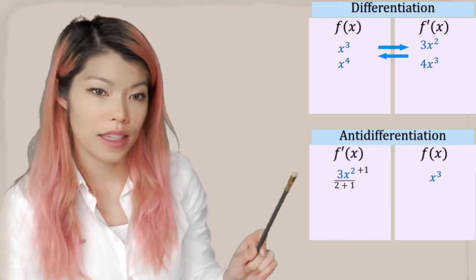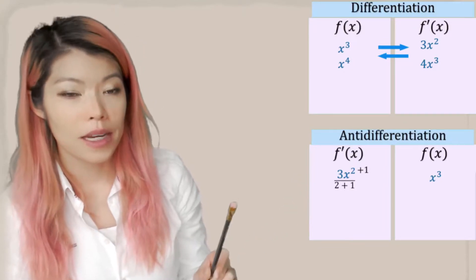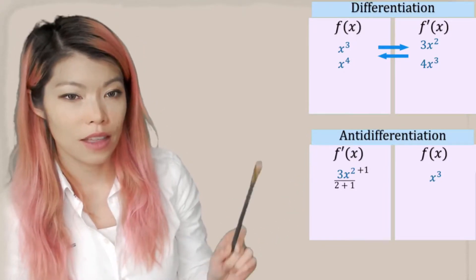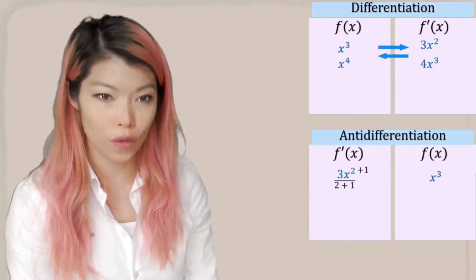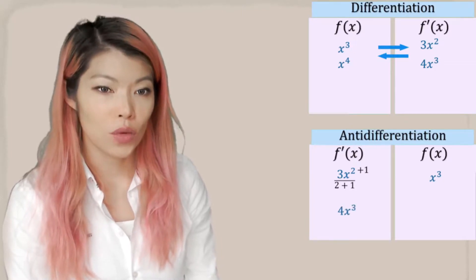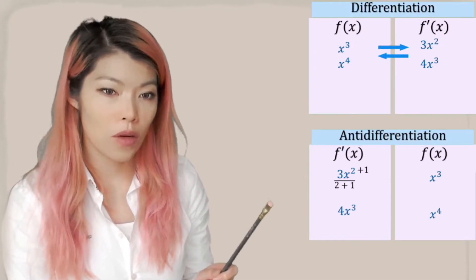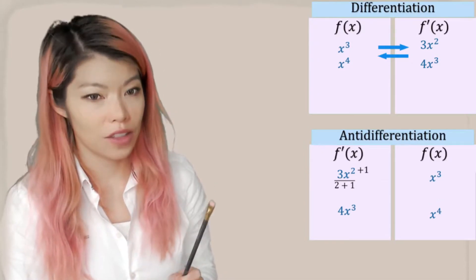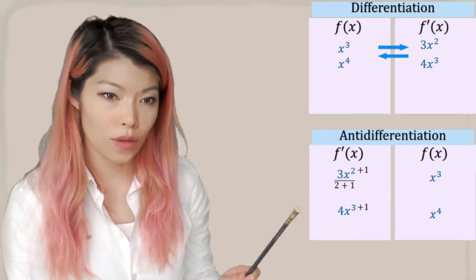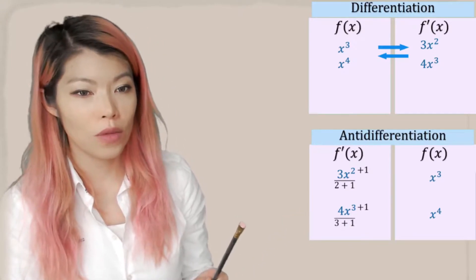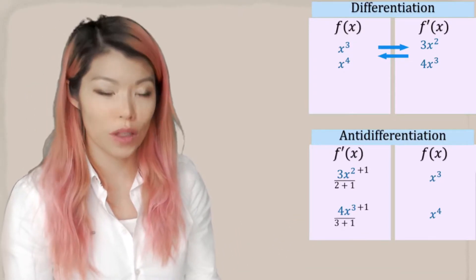So does that work? Let's see. 2 plus 1 gives us 3, and then dividing by 3: 3 over 3 gives us 1. So yes, it does give us the x cubed that we're looking for. With anti-differentiation we add to the power and divide by the new power. Add 1 to the 3 we obtain 4, and dividing by the new power we obtain x to the power 4, which is what we were looking for.